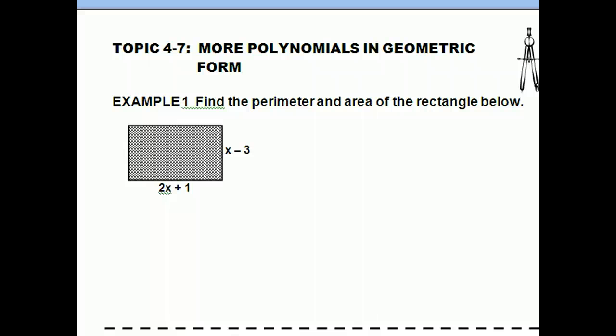Now that we know how to add, subtract, and multiply polynomials, we're going to use them to solve a few geometric problems. I'll start with a simple one — finding the perimeter and area of a rectangle.